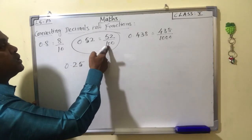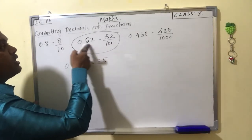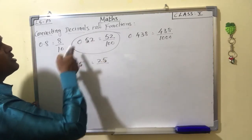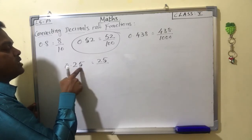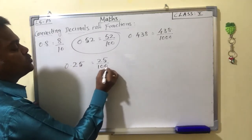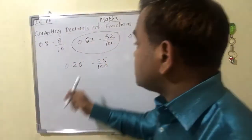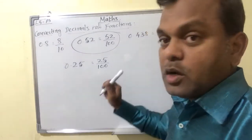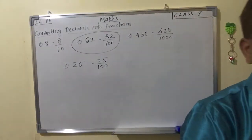The number of zeros in the denominator is the same as the number of decimal places. Here after the point there are 2 decimal places, so you put 2 zeros in the denominator — that means 100. If it is 3 decimal places, you write 1000.